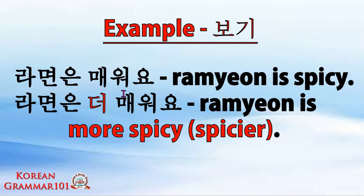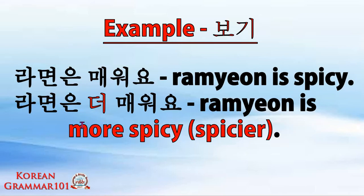The Korean word for 'example' is 부기 (pugi). Our first example is with an adjective. Ramyeonun mewoyo — ramyeon is spicy. This is a positive sentence. How about we put 더 (do), meaning 'more', into this sentence? It becomes ramyeonun do mewoyo, which means ramyeon is more spicy.